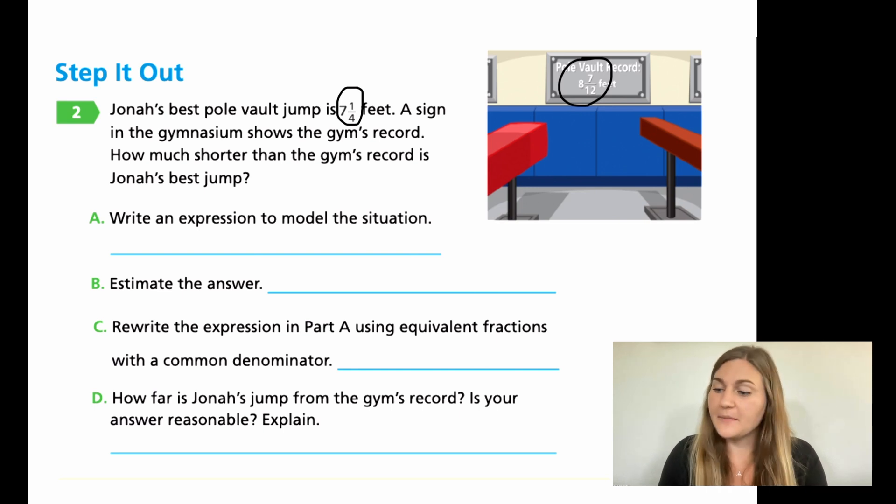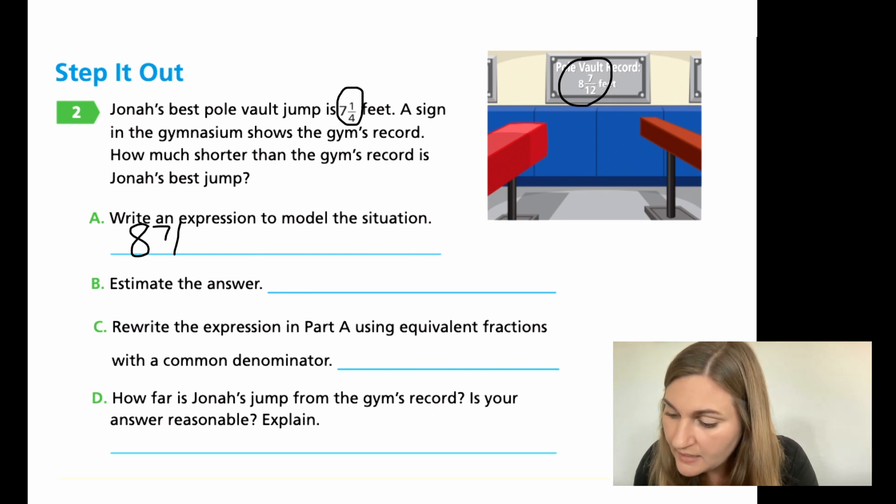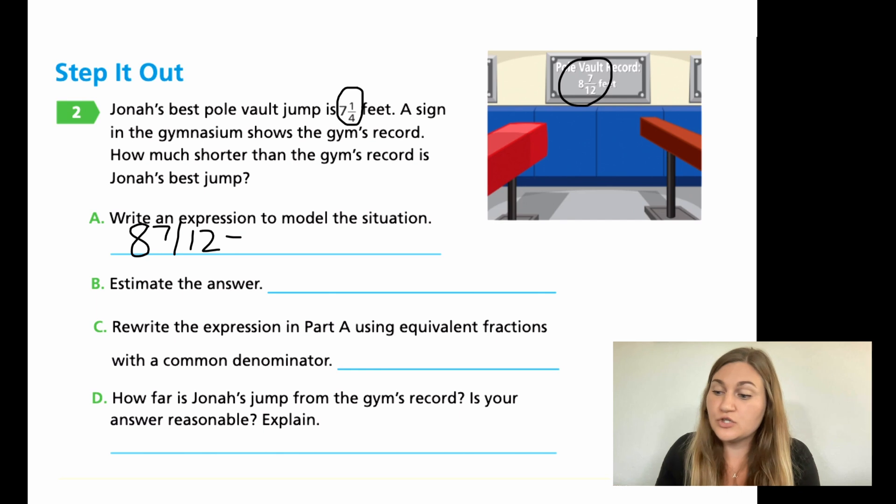Great job and welcome back. Let's go ahead and go through these. So for A, I'm just writing the expression. I'm going to start with the record, which is 8 and 7/12. And I am going to be subtracting Jonah's actual jump, which was 7 and 1/4.